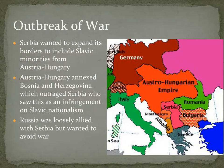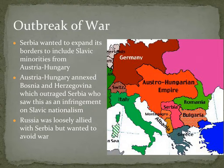Serbia had previously become independent from the Ottomans and wanted to expand its borders to include Slavic minorities from Austria-Hungary. The Serbs are part of a larger Eastern European ethnic group called the Slavs, and there were a lot of Slavic people within the Austro-Hungarian Empire — especially in the southern part — who felt nationalism and would like to break away and join other Slavic people to form an official Slavic homeland.